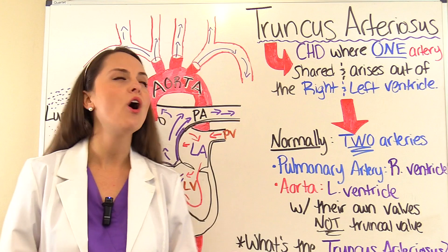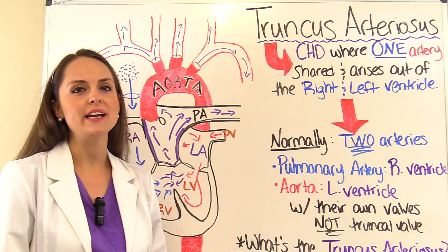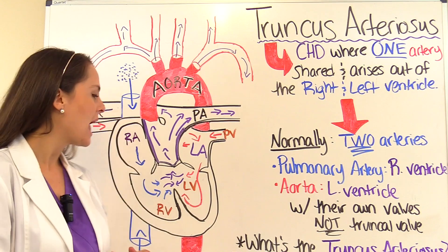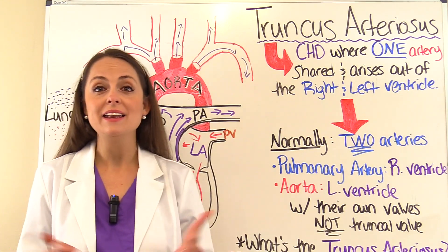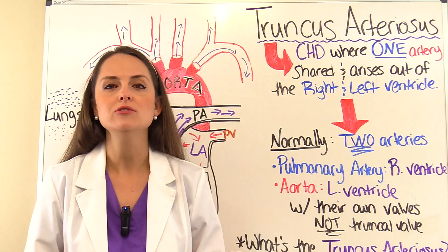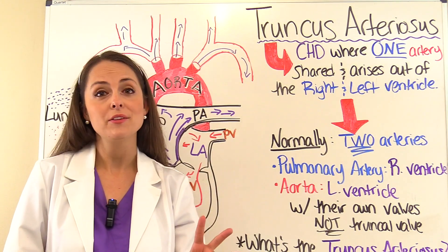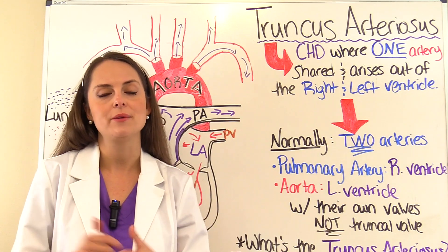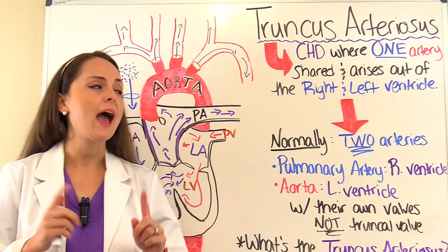Truncus arteriosus is a congenital heart defect where there is one artery that is shared and actually arises out of the right and left ventricle. Normally this isn't how your heart should be set up — you should have two separate arteries that each do their own thing, not one that is shared.